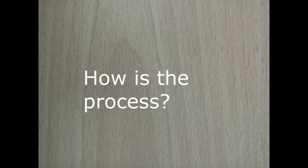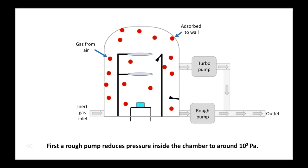How is the process in PVD taken place? First, a rough pump reduces the pressure inside the chamber to around 1000 pascal. As you can see from the diagram, the air inside the chamber is moving out.